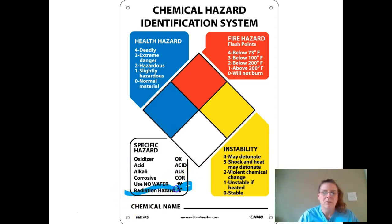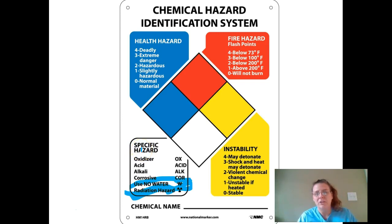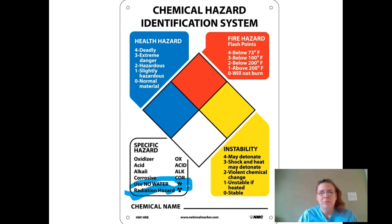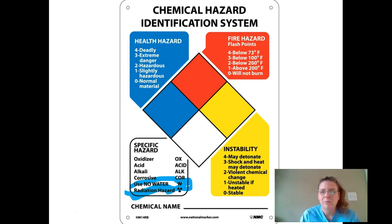The ones you want to focus on and copy down in your journal are these: 'no water,' shown as a W with a line through it, and radiation hazard. Both of those will likely show up on a test, so please make sure you write them in your journal. If you haven't drawn the other ones yet, try to draw them too. I will be checking for the three drawings of the GHS system and the two symbols on this slide.